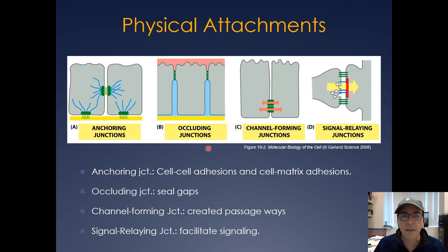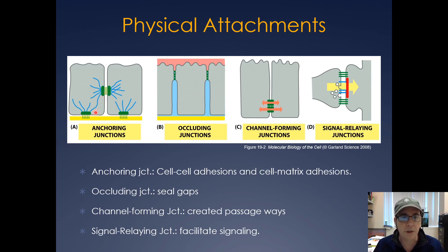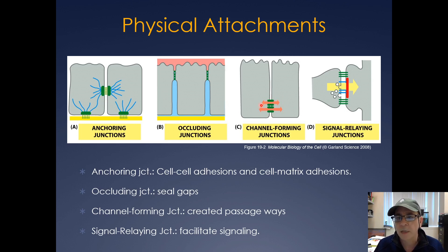There are four main types of physical attachments, some broken down into subgroups. You have your anchoring junctions, which hold cells to each other and to the extracellular matrix. In epithelial cells, like in our intestinal lumen, we have occluding junctions, which help keep certain liquids on one side versus the other. There are also channel-forming junctions that allow free passage of ions, and then signal-relaying junctions — for example, synapses and immunological synapses.